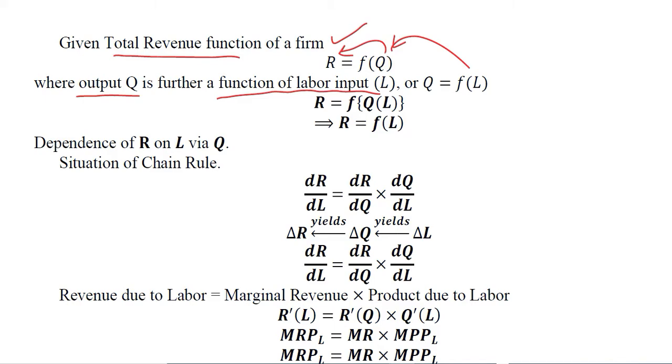We are collecting all three of these variables in one function where labor is causing Q and Q is causing R. Labor is producing more output and more output is enabling us to make more revenue. Finally, labor is affecting revenue in an indirect way, and that indirect way is via Q.